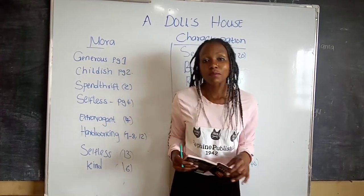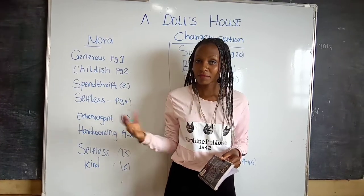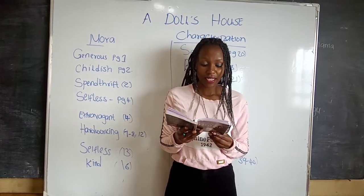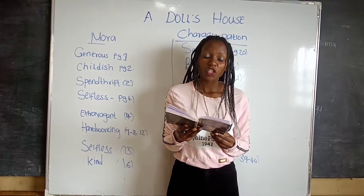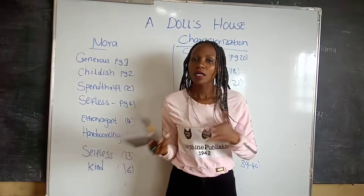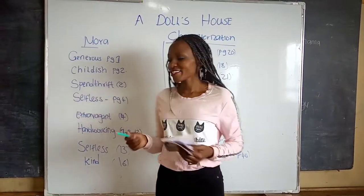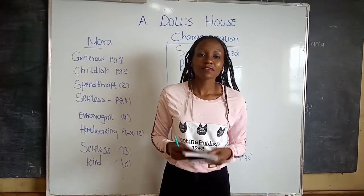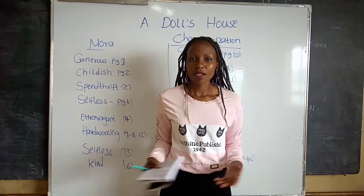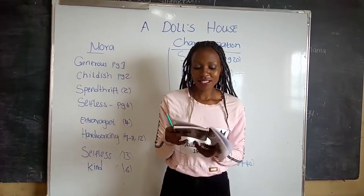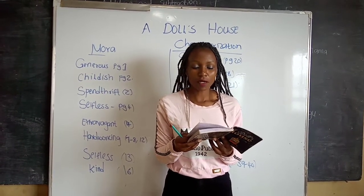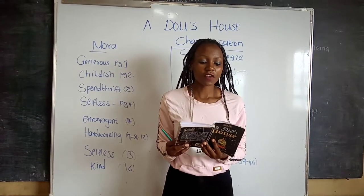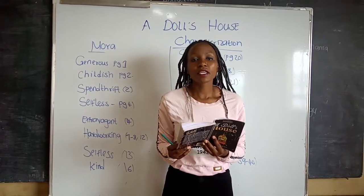Next point: she is extravagant, on page four. We learn this from Helmer, whereby he calls Nora an 'extravagant little person.' So on page four, almost the last line: 'Very well. But now tell me, you extravagant little person.' So from Helmer, we can say that Nora is extravagant. The next trait is that she is hardworking. In the last Christmas — that is on page seven to eight — she shut herself in the room until after midnight preparing ornaments for the Christmas tree. On page seven, Helmer is saying: 'Do you remember last Christmas? For full three weeks beforehand, you shut yourself up every evening until long after midnight, making ornaments for the Christmas tree.' So note that down using your pencil.